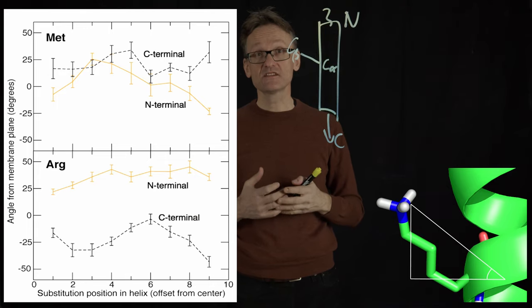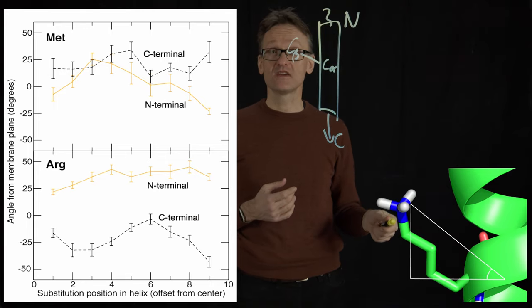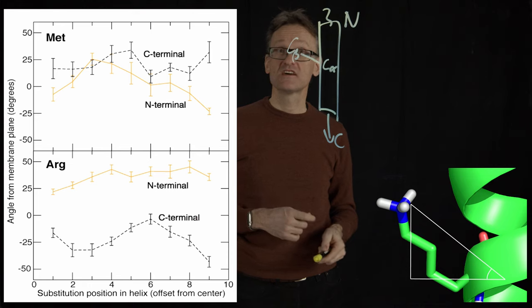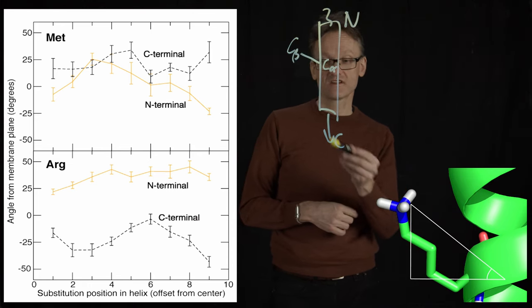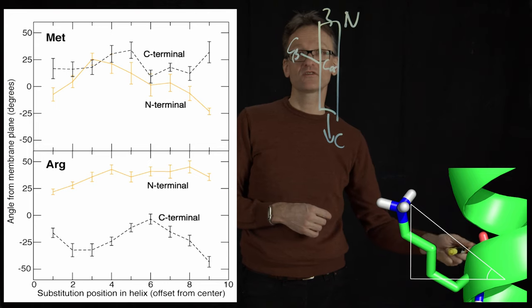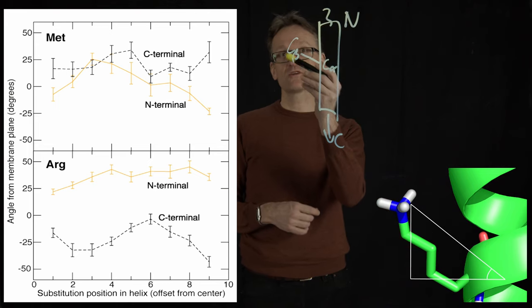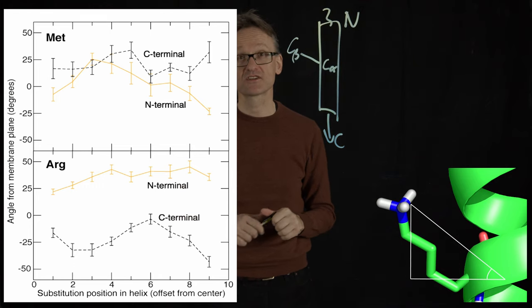So it's going to be easier for the arginine to be located close to the N-terminus than it is to put it at the C-terminus, because at the C-terminus here, the first bond by definition goes a bit in the wrong direction, and then I would have to snorkel in the other direction.